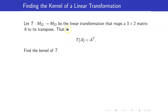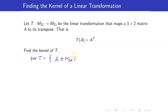For example, suppose that our linear transformation is a function from the set of all 3 by 2 matrices to the set of 2 by 3 matrices, and it maps a matrix A to its transpose. Let us find the kernel of T. By definition, we are looking for all vectors in V — but our vectors in V would be matrices in M32 — such that they get mapped to the zero vector in M23, which is just a zero matrix with two rows and three columns.